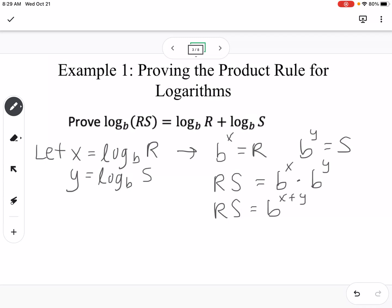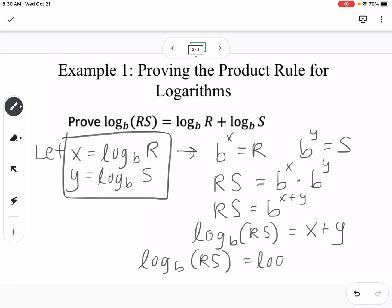So then we can switch that form and say back to log form. So I can say log base B of RS is equal to x plus y. And then finally we can substitute back in what we let x equal and what we let y equal. So this would be log base B of RS is equal to log base B of R plus log base B of S. So that's the proof. We could also do that for the quotient rule and the power rule as well.